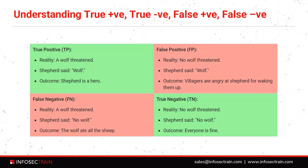We have true positive, true negative, false positive, and false negative. Starting with true positive: suppose in reality there is a wolf, and the wolf is present in the village. Shefford spotted it and started shouting 'wolf, wolf, wolf,' notifying everyone in the village that there is a wolf. The outcome is Shefford is a hero.